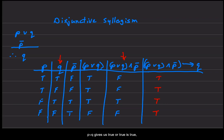P or Q gives us true or true is true. True or false is true. False or true is true. False or false is false.